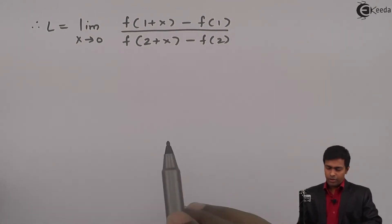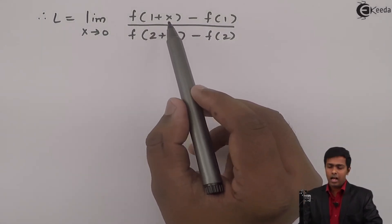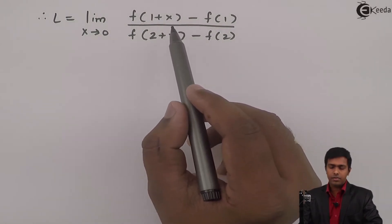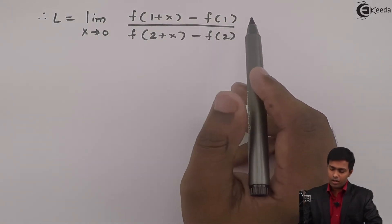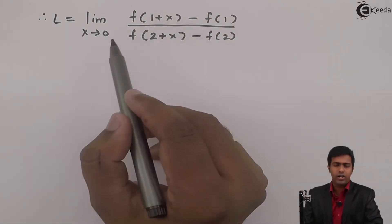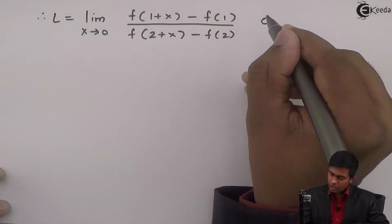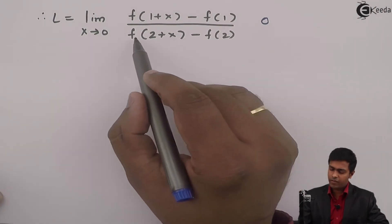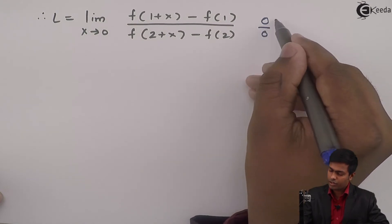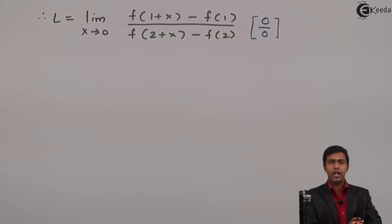If we observe, we have f(1+x) − f(1) in the numerator. If we substitute x = 0, we get f(1) − f(1) = 0 in the numerator, and f(2) − f(2) = 0 in the denominator. This means we are getting an indeterminate 0/0 form, and hence we have to apply L'Hôpital's rule or another method to remove it.